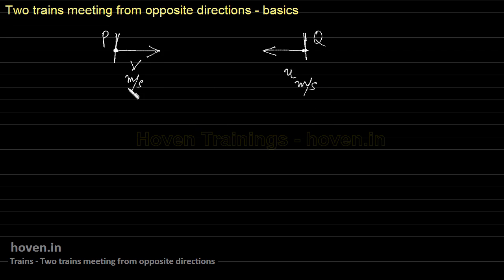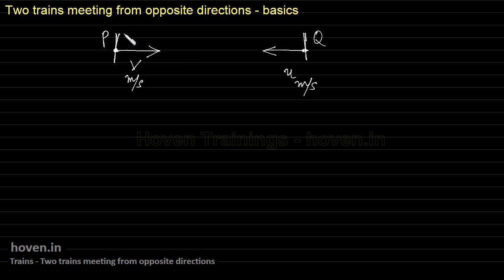I am discussing the theory, so we are taking variables V and U instead of specific values. Let us understand the zero-level basics of what goes on in such cases. We have to find out the time the two trains take to meet each other. The distance between the two stations can be denoted by L.